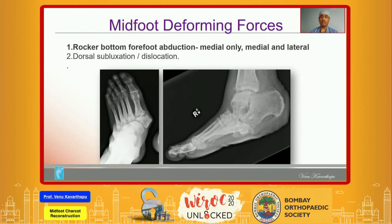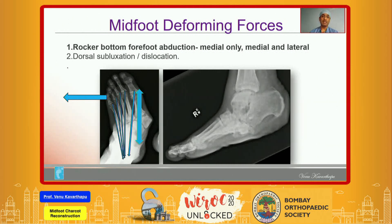If you look at the rocker-bottom forefoot abduction type, the disease initially starts in the midfoot, resulting in collapse of the medial column. The disease process in the medial column of the midfoot lengthens the medial column, pushing the forefoot into abduction. The resulting forces of the musculotendinous units also exaggerate the deformity in that plane. In the sagittal plane, as the midfoot collapses in the medial column, that drives the hindfoot into equinus. The tendo-Achilles gastrosoleus complex pulls that segment, whereas the tibialis anterior pulls the anterior segment, exaggerating the deformity.